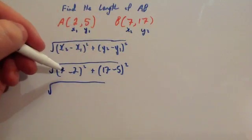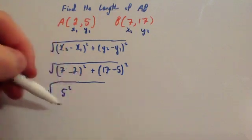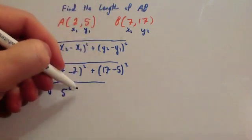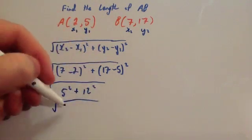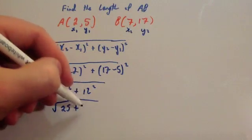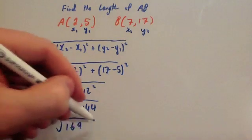So whenever you work that out, that's going to give you 7 take away 2 is 5 squared. Remember, that was the base of our right-angle triangle we had, plus 12 squared. And then we square root that, so that's going to be 25 plus 144. So you get the square root of 169, which is equal to 13.